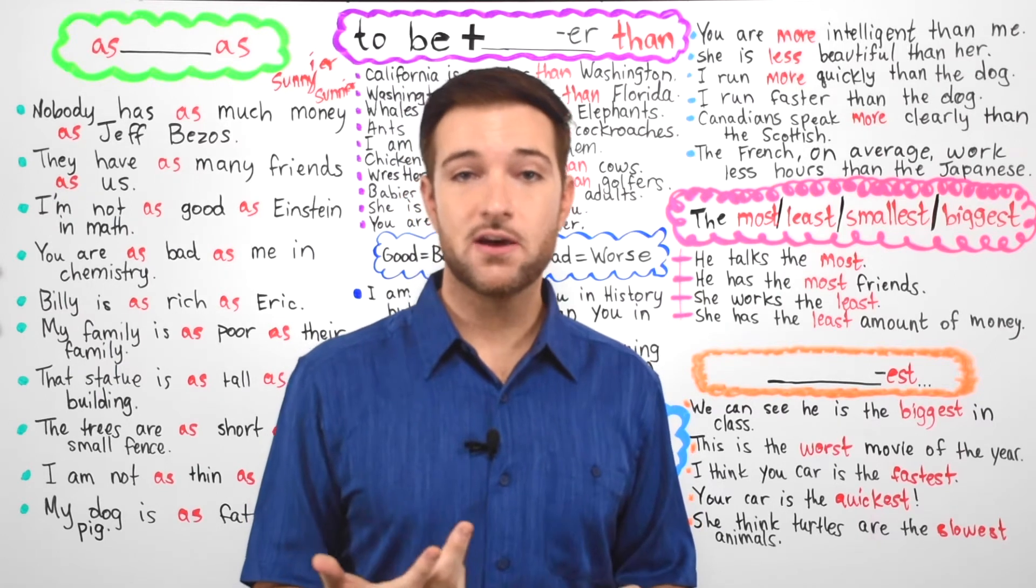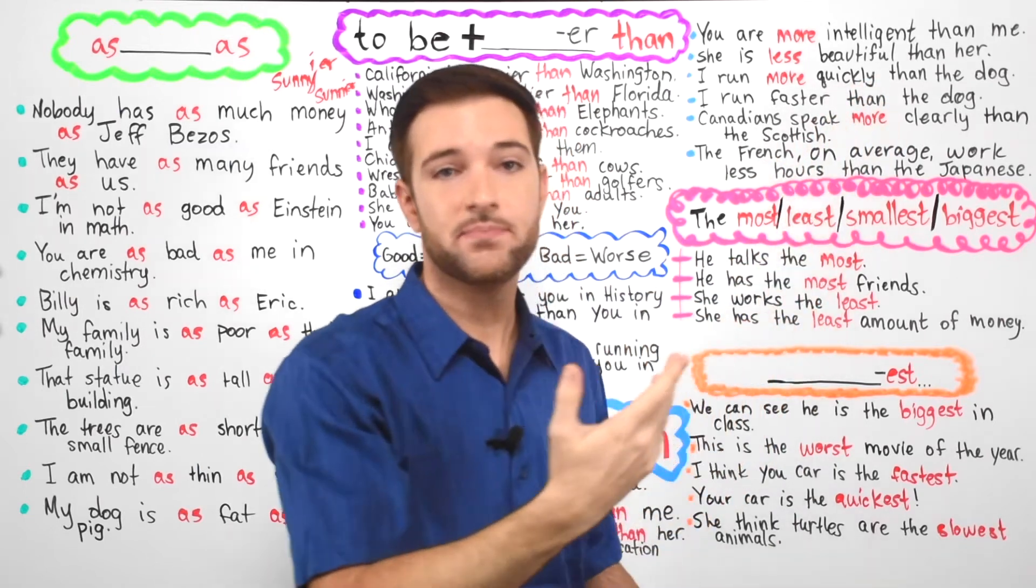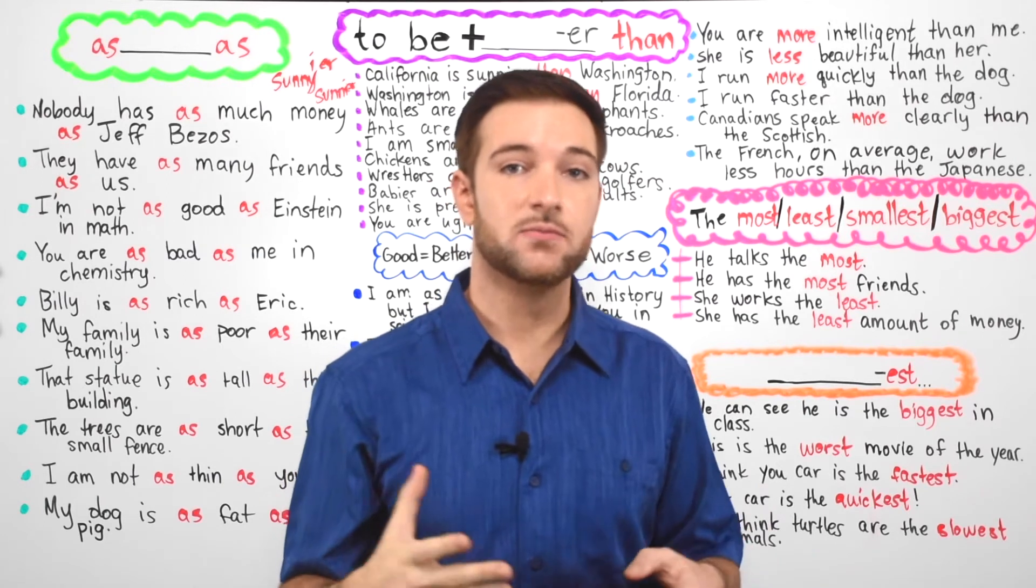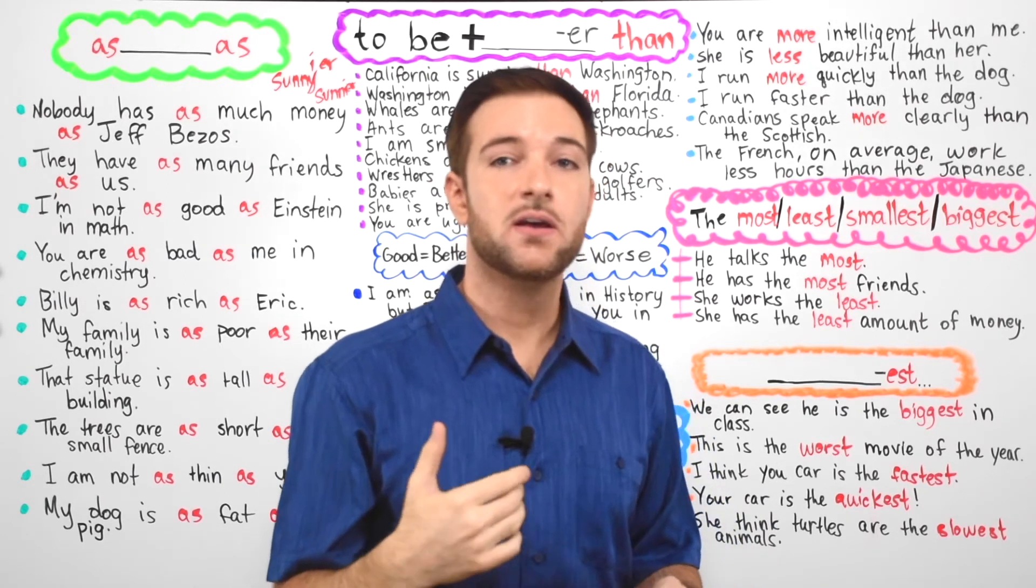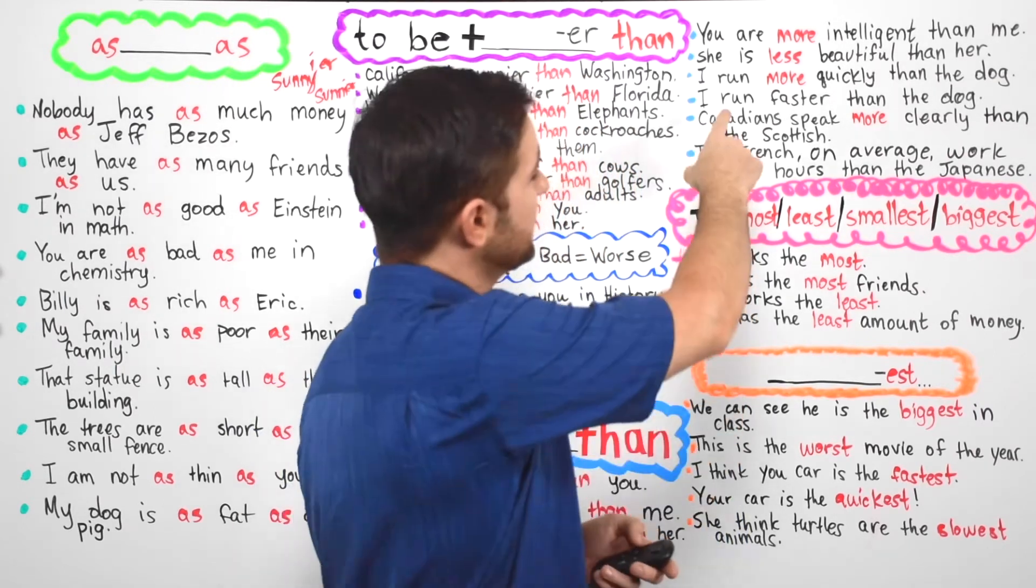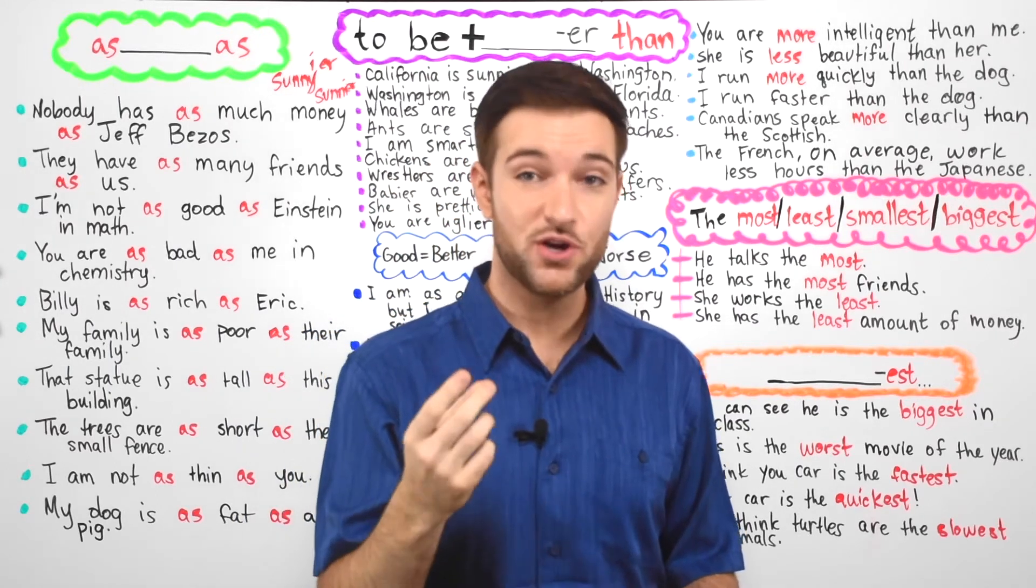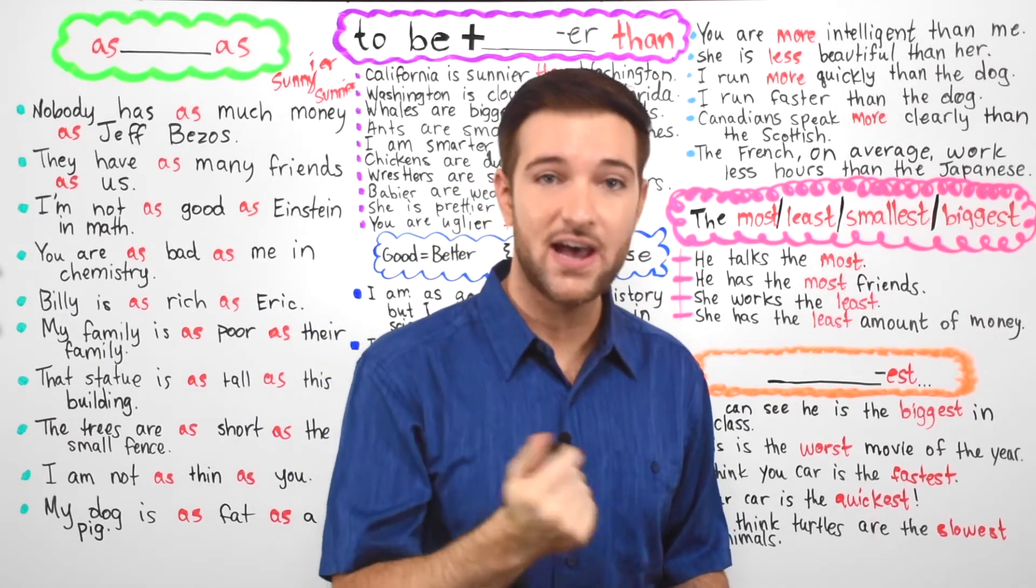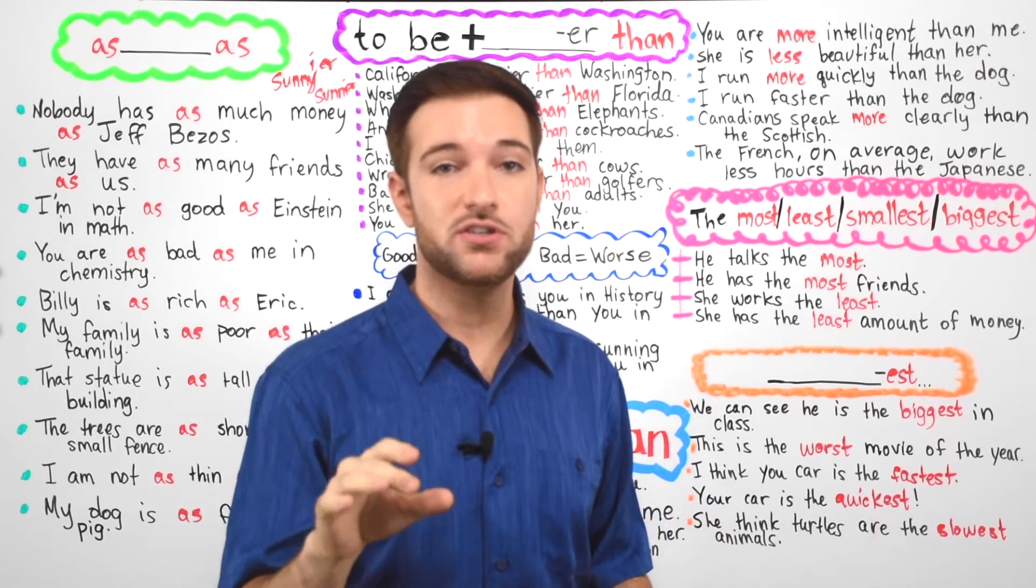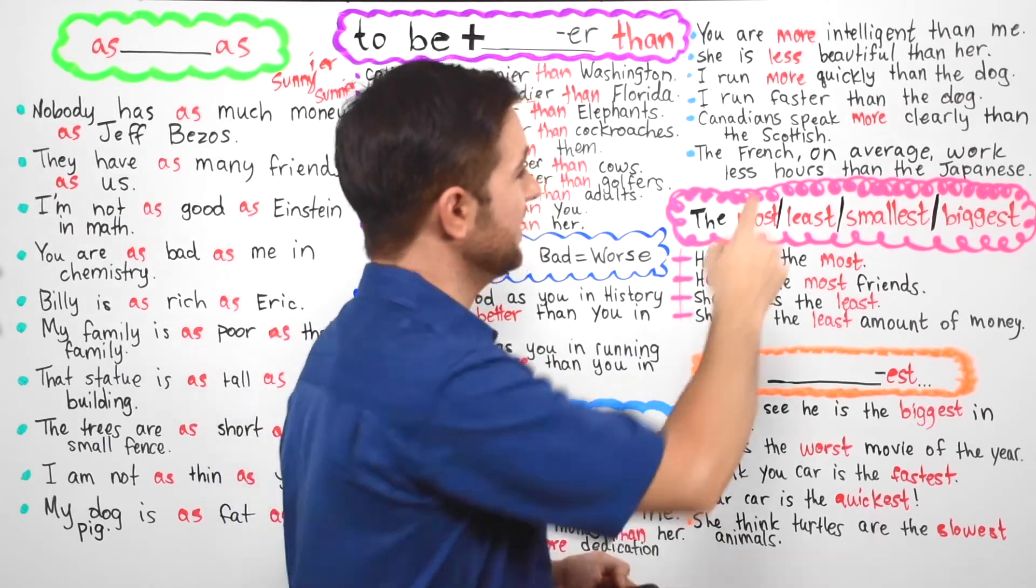So here we have something that's a little interesting. When you encounter an adverb with the ending L-Y, like quickly L-Y right there, you have to always use the form more less space than with L-Y. Hence, I run more quickly than da-da-da-da-da. Now, here in this one, you can see it's a little different. Since this word does not have an L-Y, you know right away that you have to use an E-R. And remember that with E-R, you are not required to use the word more before. Hence, I run faster than the dog.